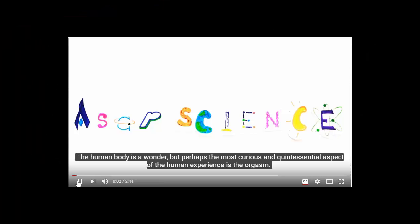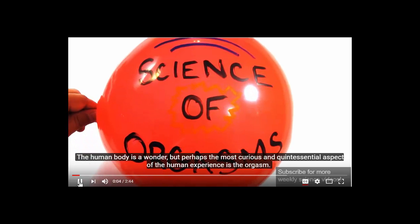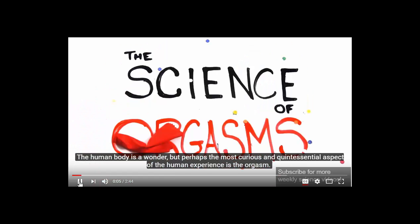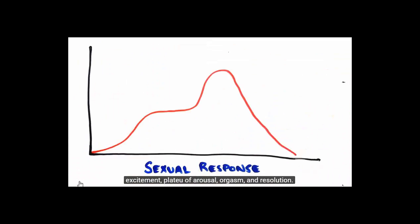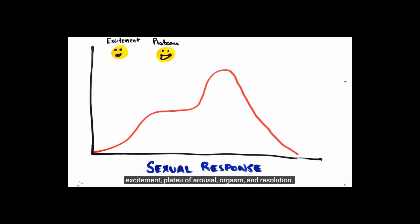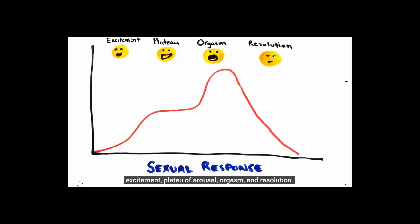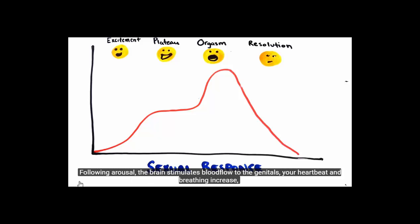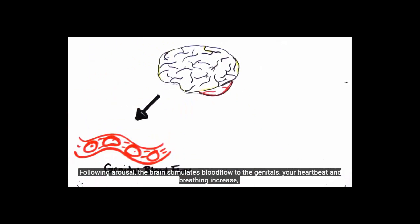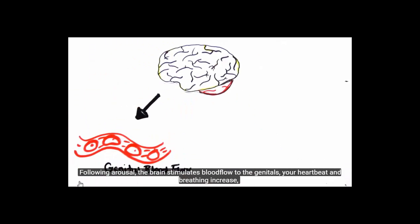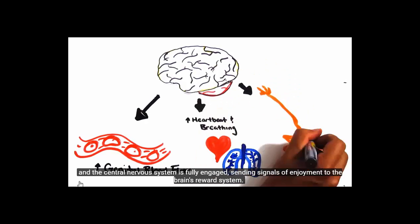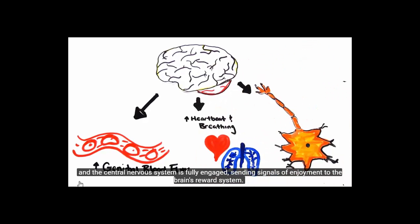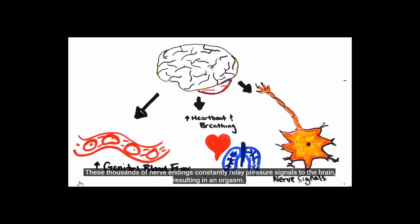Perhaps the most curious and quintessential aspect of the human experience is the orgasm. The body's sexual response is typically broken down into four stages: excitement, plateau of arousal, orgasm, and resolution. Following arousal, the brain stimulates blood flow to the genitals, heartbeat and breathing increase, and the central nervous system is fully engaged, sending signals of enjoyment to the brain's reward system.